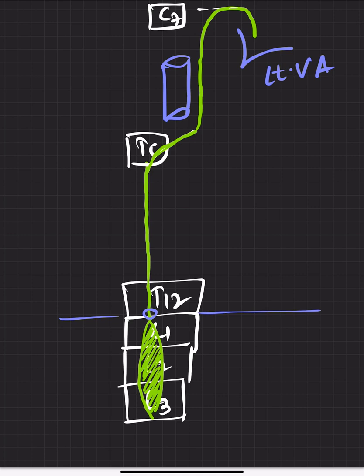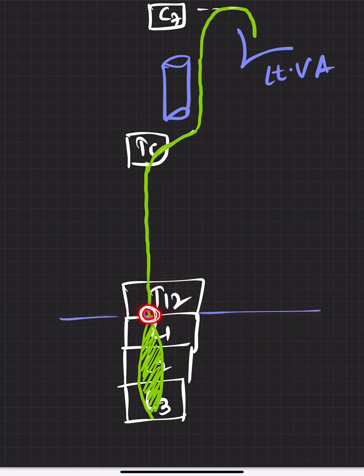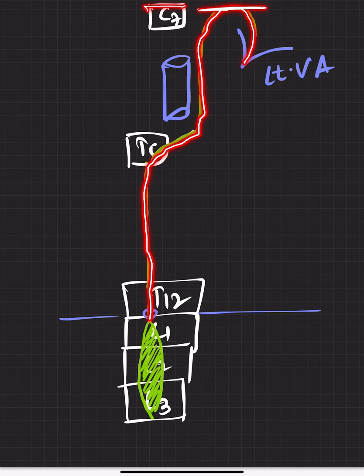To recap the course: the thoracic duct is a continuation of the cisterna chyli — a triangular dilatation on the bodies of L1, L2, L3. At T12, the aortic orifice allows it to enter the thorax. At T5 it takes a left turn, runs along the left border of the esophagus, and drains into the left venous angle. The summit of its arch reaches the level of C7 vertebra. The left venous angle is formed by the left jugular vein and left subclavian vein.